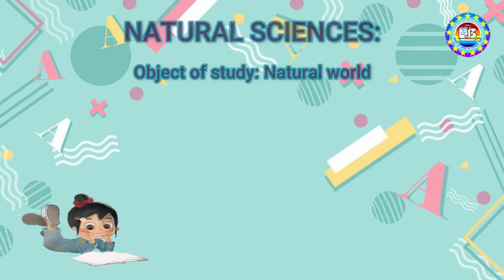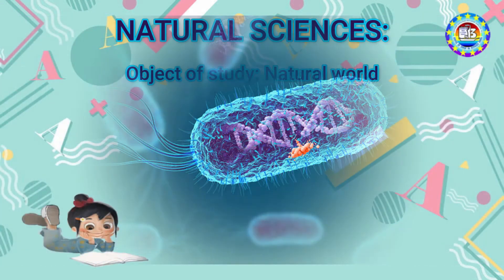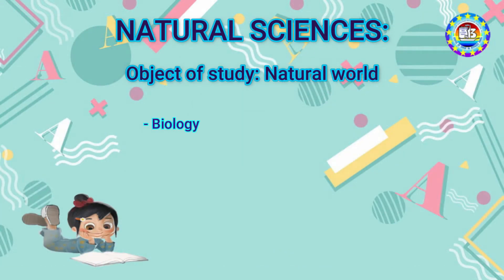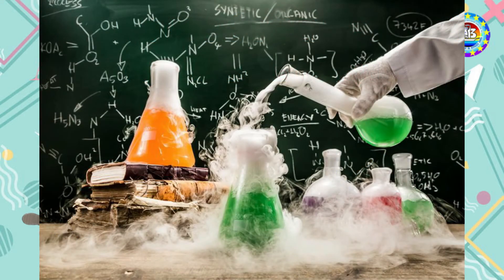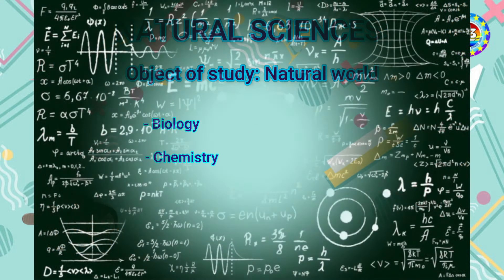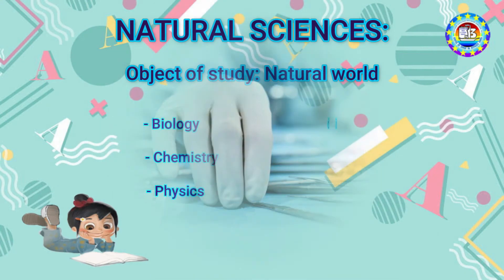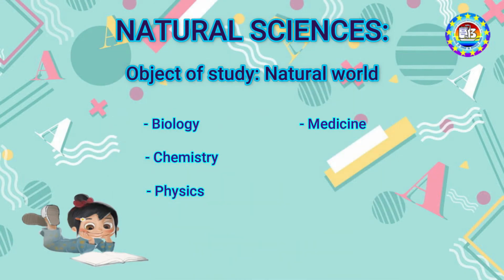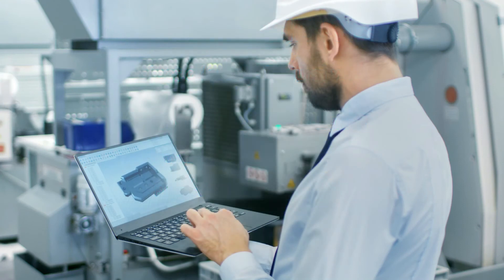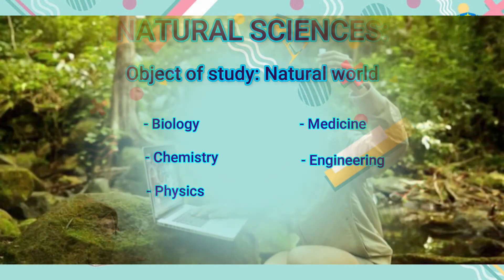Now we are moving on to the third type — natural sciences. Natural science tries to study the natural world, and we can guess what sciences would be included here: biology, chemistry, physics, medicine, engineering, and environmental science.